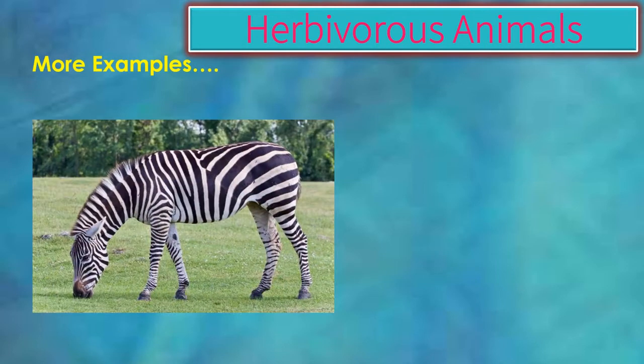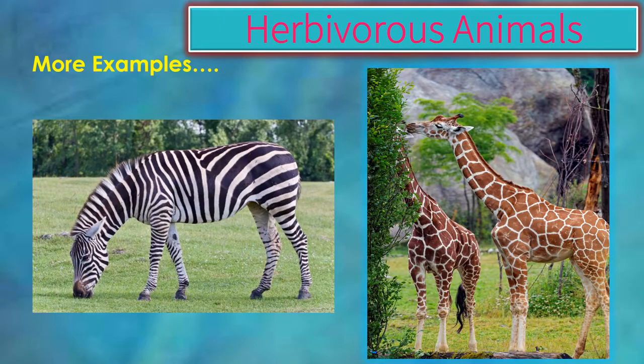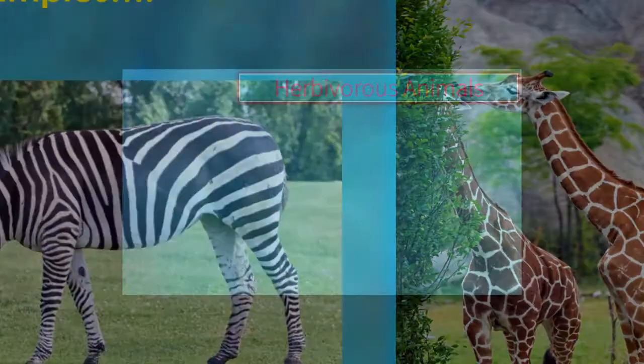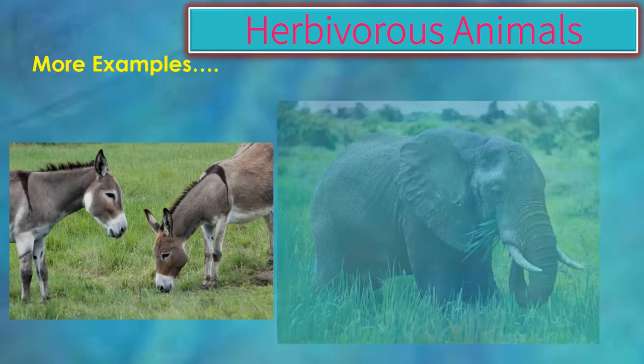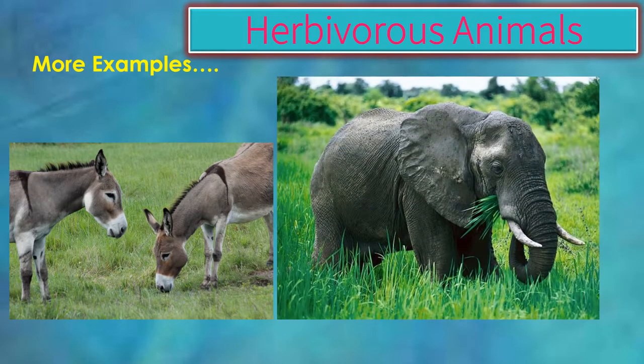Some more examples of herbivorous animals are zebra and giraffe. Also, donkey and elephant eat grass and they are also categorized into herbivorous animals.